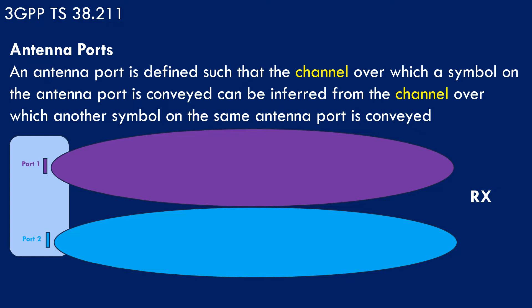In this figure you can see there is an antenna on the left which has two ports. Please note that these are virtual ports, not physical ports. These ports are from the UE perspective — how the UE sees the signal coming towards it. Whenever a signal travels through a channel, the radio channel makes some changes to the signal, and on the receiver side we need to decode the actual signal.